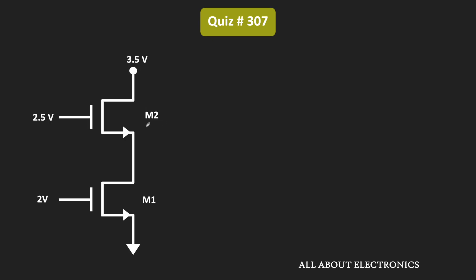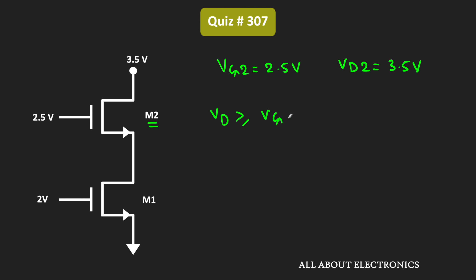So first of all, let us find the state of transistor M2. Here the gate voltage VG2 is equal to 2.5V, while the voltage VD2 is equal to 3.5V. Now for the transistor to operate in the saturation region, the drain voltage VD should be greater than or equal to VG minus VT. In this case, VG2 minus VT is equal to 1.5V. And since this drain voltage is greater than VG2 minus VT, so we can say that transistor M2 is operating in the saturation region.